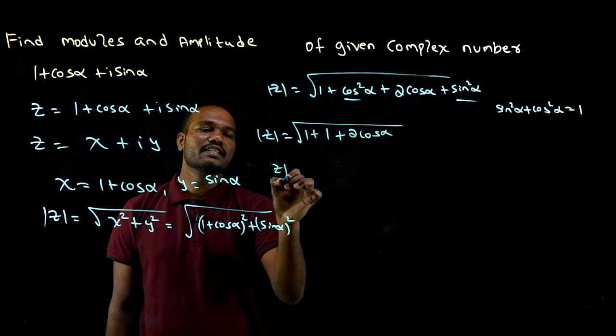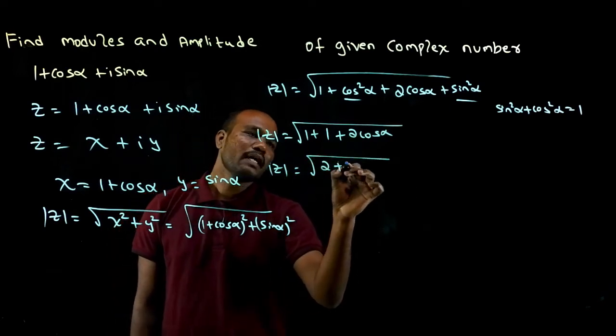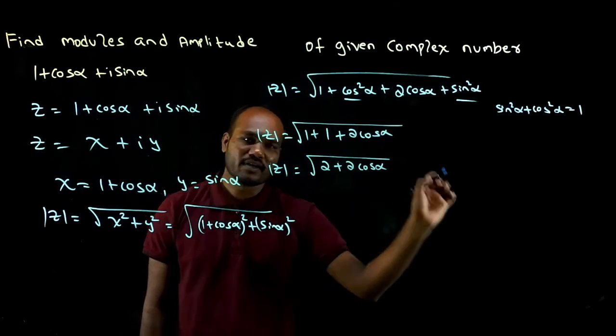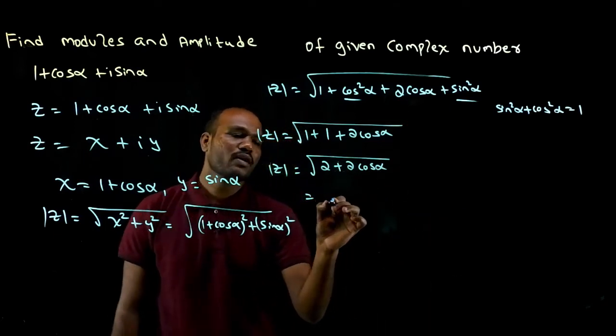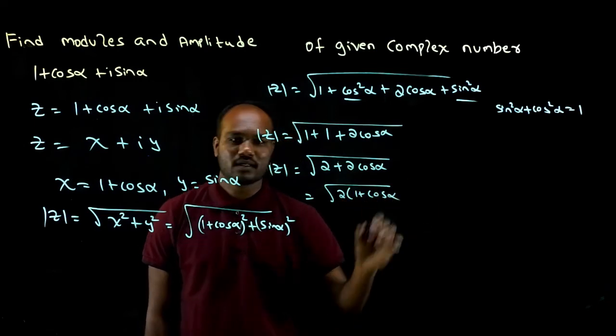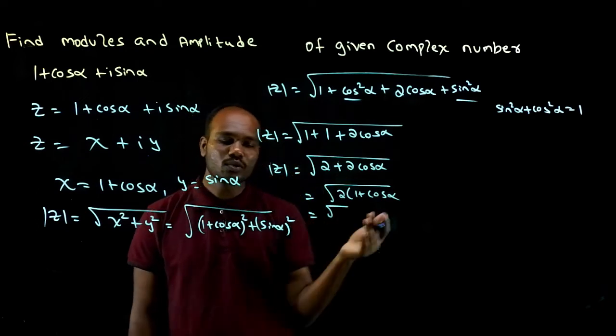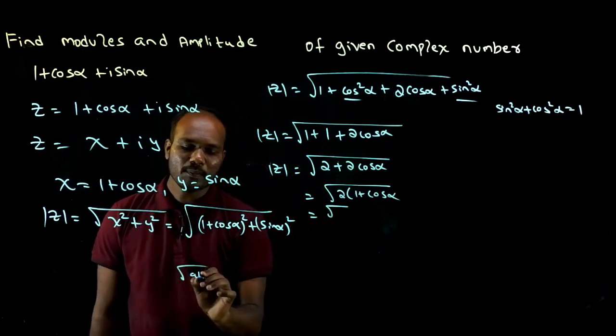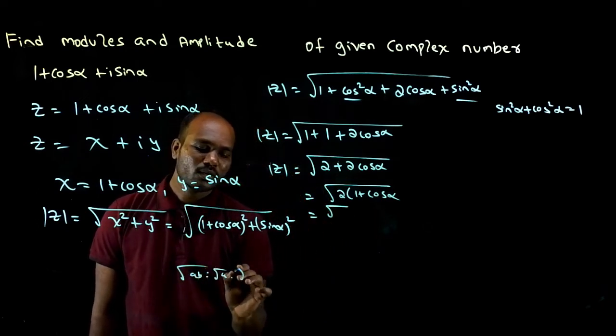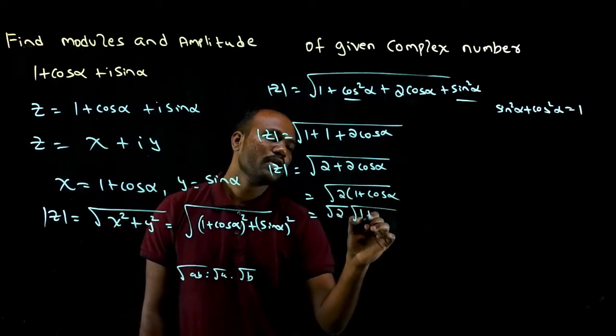Modulus of Z equals root of 2 plus 2 cos alpha. I can take 2 common, so I'll get root of 2 times 1 plus cos alpha. Now I can take root 2 outside because root ab is root a times root b.